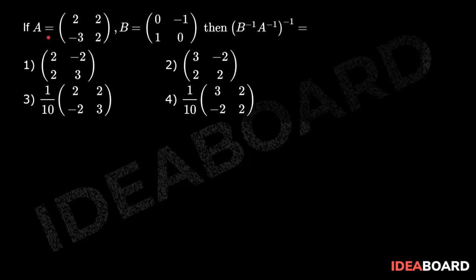If A equals [[2, 2], [-3, 2]] and B equals [[0, -1], [1, 0]], then what is (B inverse into A inverse) whole inverse equal to?